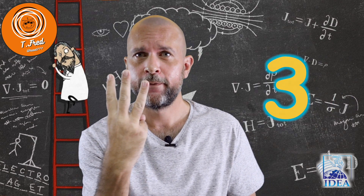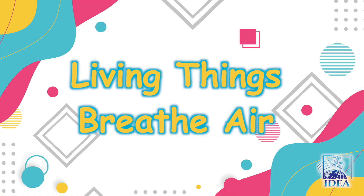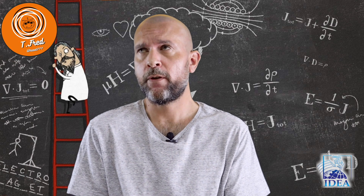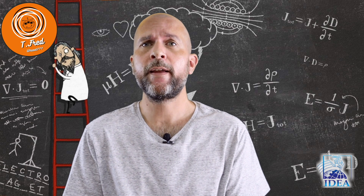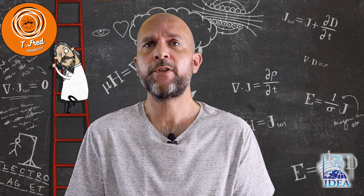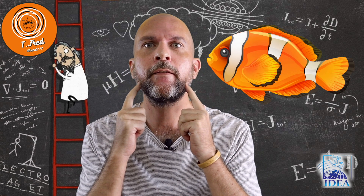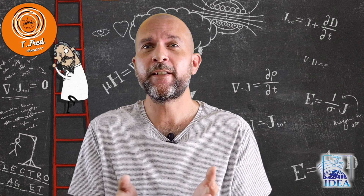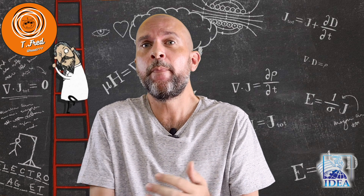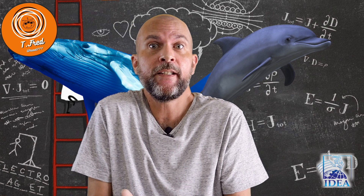Number 3: living things breathe air. Most living things on land breathe air with two lungs. Some living things that live in the water use gills to breathe. Some water-dwelling living things also breathe air with lungs — they are called mammals, such as whales, dolphins, manatee, and seals.